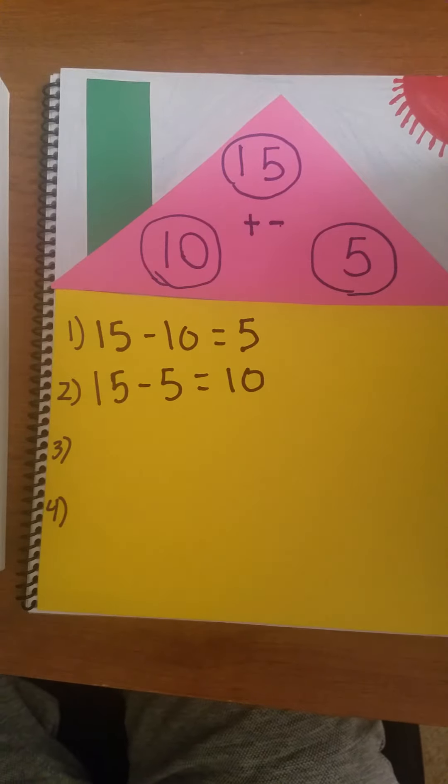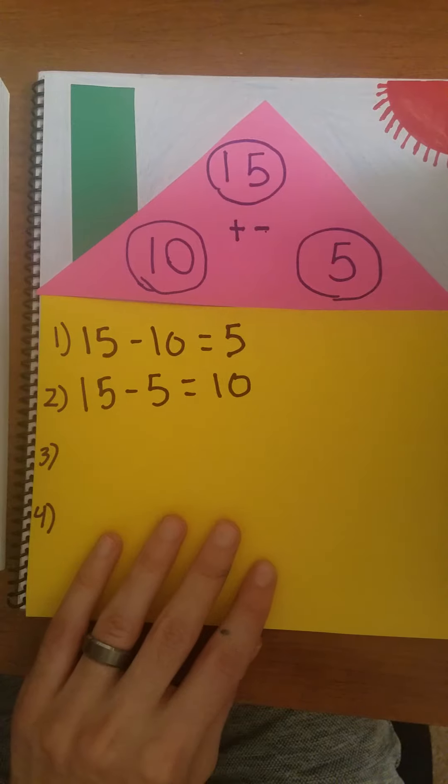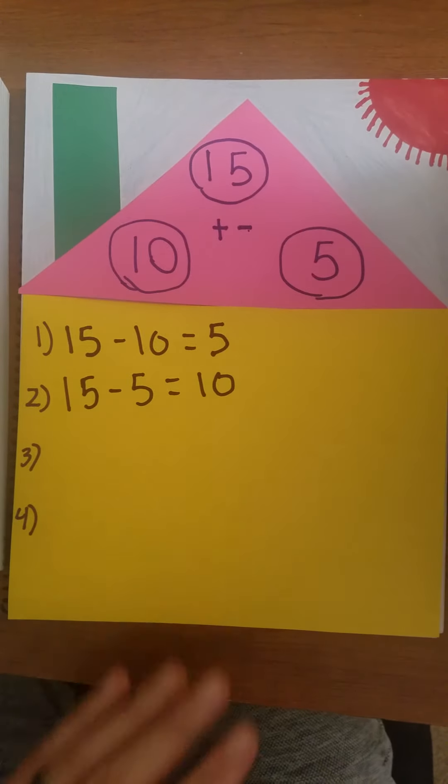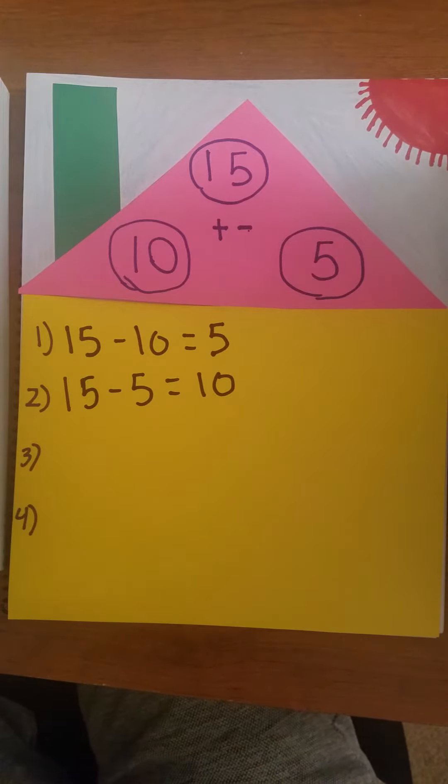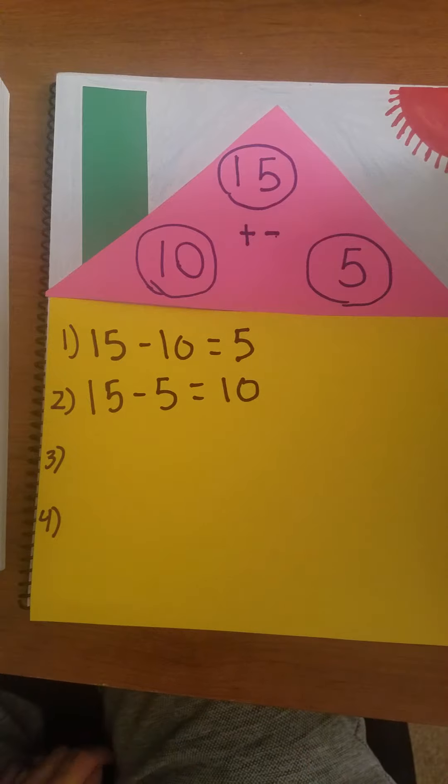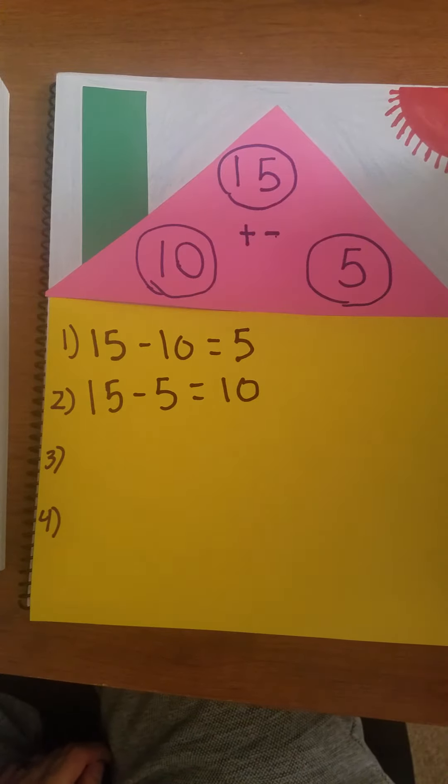If you want to make more fact family houses, you can use any of your doubles facts or pairs that make 10, and use those three numbers in that number sentence to go ahead and make additional fact family houses.